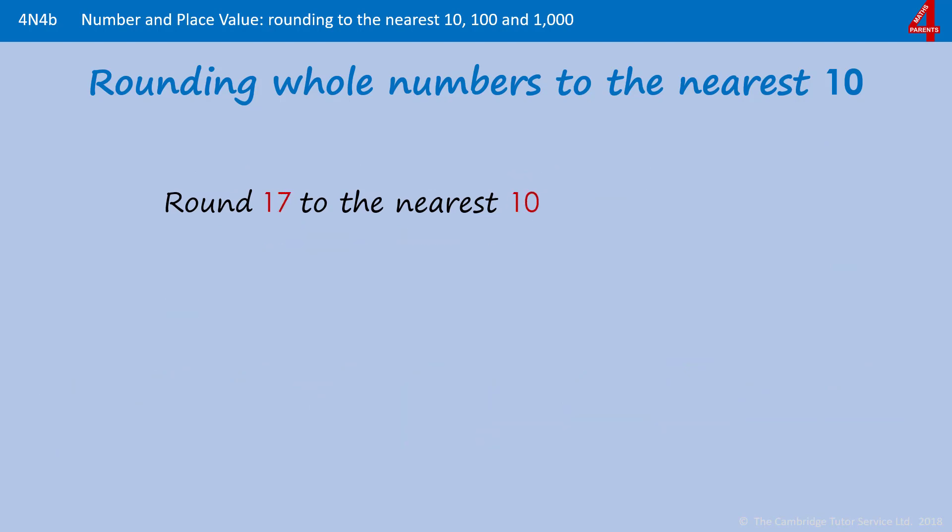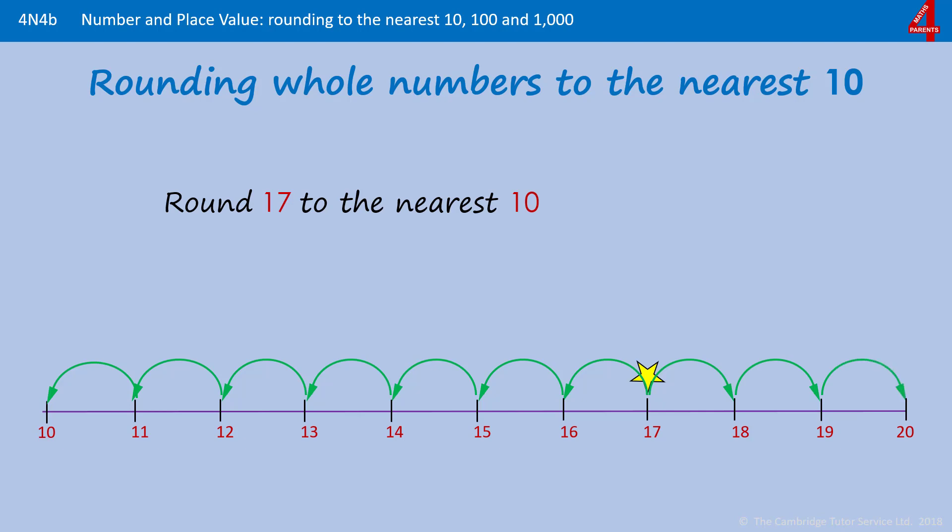Rounding 17 to the nearest 10: put 17 on the number line. This time you can see that 17 is further away from the 10 than it is from the 20. Because it's nearer to the 20, we round 17 to 20.